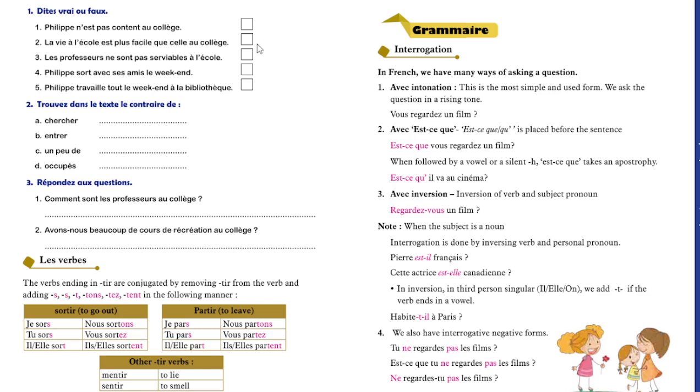Now, Dites vrai ou faux. Philippe n'est pas content au collège. Philippe is not happy in the college. False. La vie scolaire est plus difficile que le collège. The school life is much more difficult than college. No. Les professeurs ne sont pas serviables à l'école. The professors are not friendly. False. Philippe passe ses weekends avec ses amis. Philippe spends his weekends with friends. It's true. Philippe travaille le weekend à la bibliothèque. He works in the bibliothèque on its weekend.